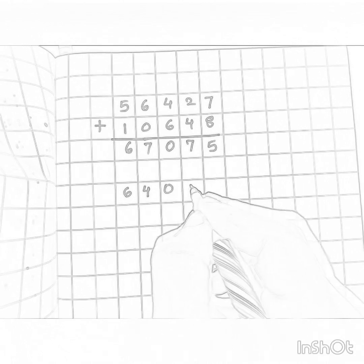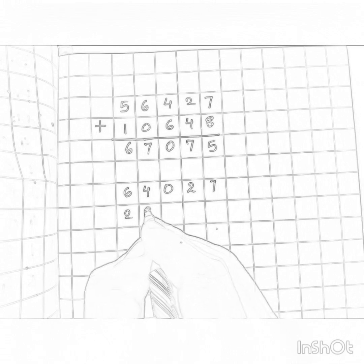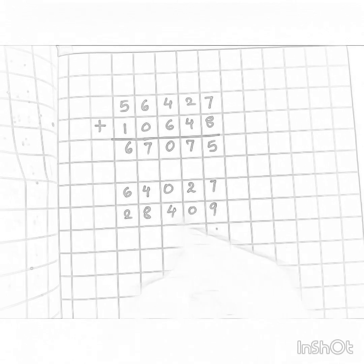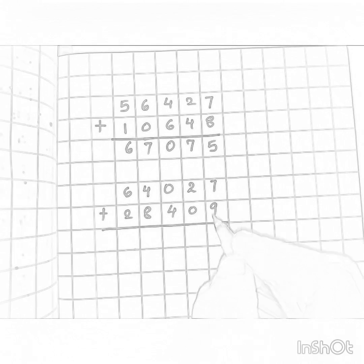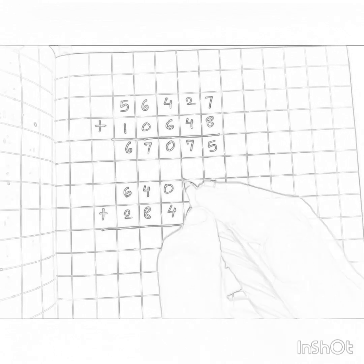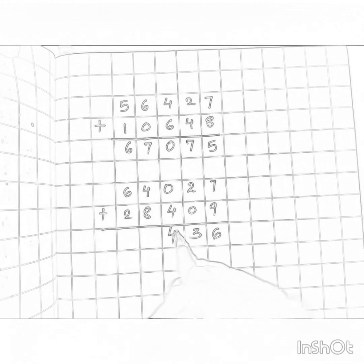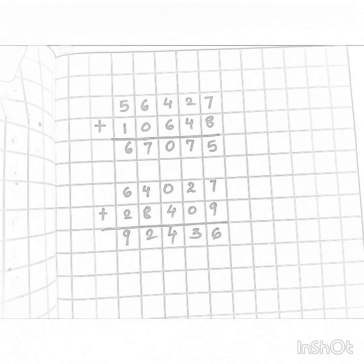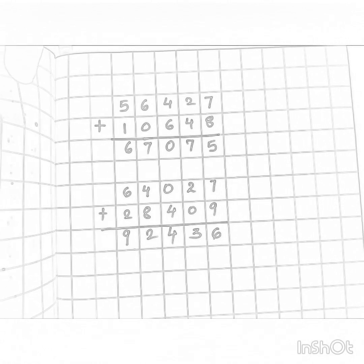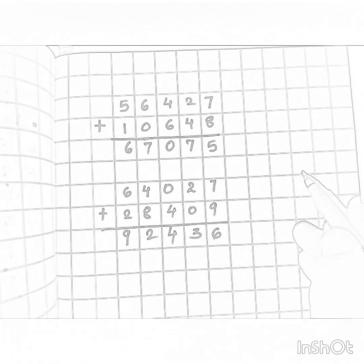Let us solve the third example: sixty four thousand and twenty seven plus twenty eight thousand four hundred and nine. Nine plus seven is sixteen, carry one forward. Two plus one is three. Zero plus four is four. Eight plus four is twelve, carry one. So: six, seven, eight, nine — the answer is ninety two thousand four hundred and thirty six.